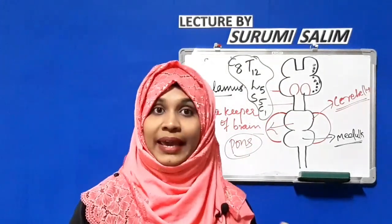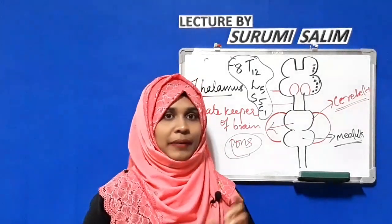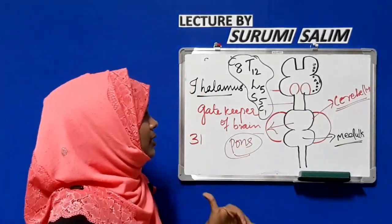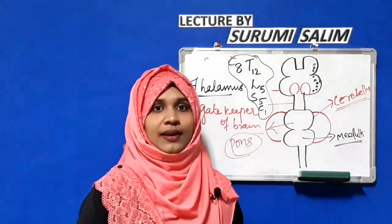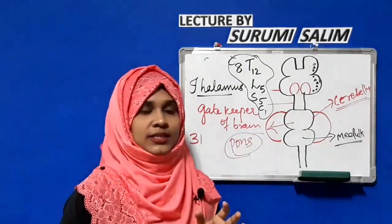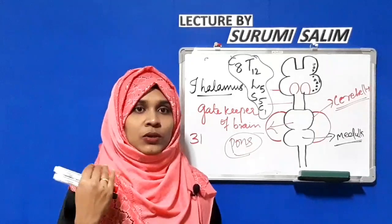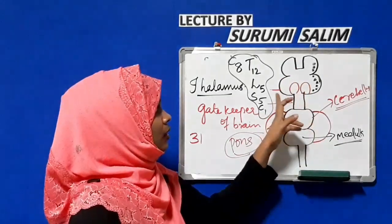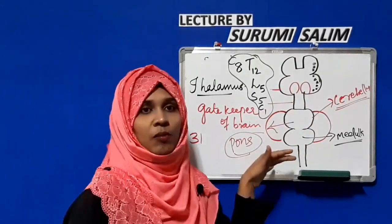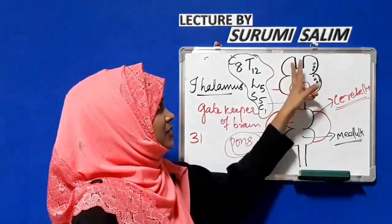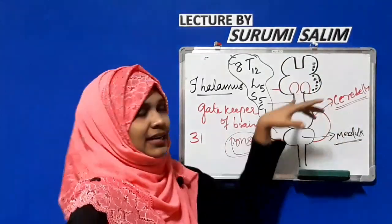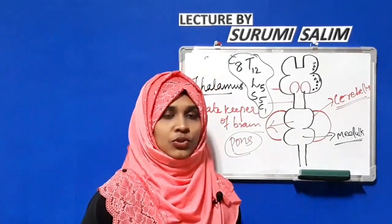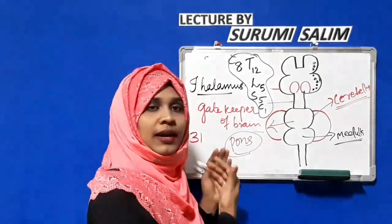Important terminology to remember: the forebrain is also called prosencephalon, the midbrain is mesencephalon, and the hindbrain is rhombencephalon. The cerebral hemisphere is called telencephalon, and the diencephalon consists of the thalamus and hypothalamus. We also learned about the limbic system. Now let's go through some exam questions based on what we have learned.